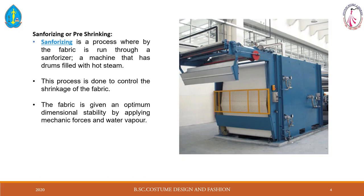The fabric is given optimum dimensional stability by applying mechanical forces and water vapor. What this means is that the fabric achieves maximum stability — shrinkage is controlled. So in the finished garment, after washing, the shrinkage level is zero. That is the purpose of sanforizing finishing — it is also called a 0-0 finish. Sanforizing equals pre-shrink equals 0-0 finish.